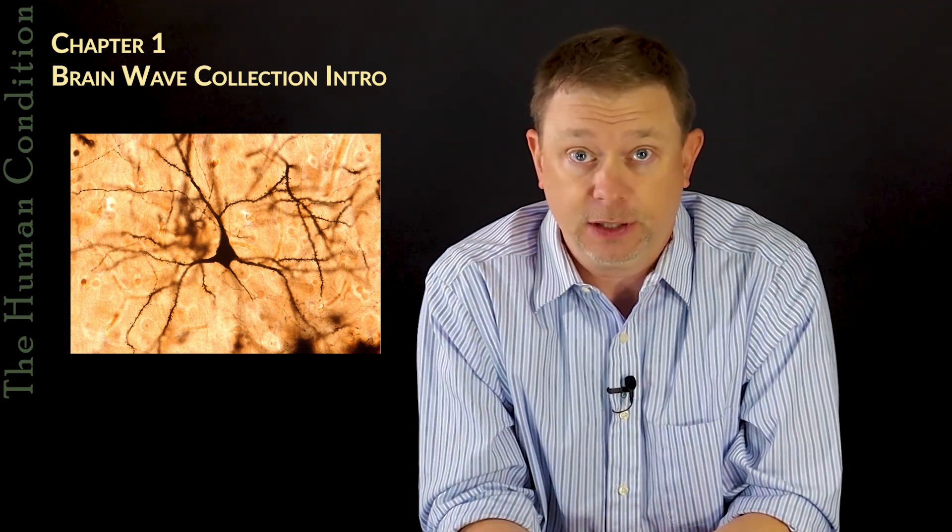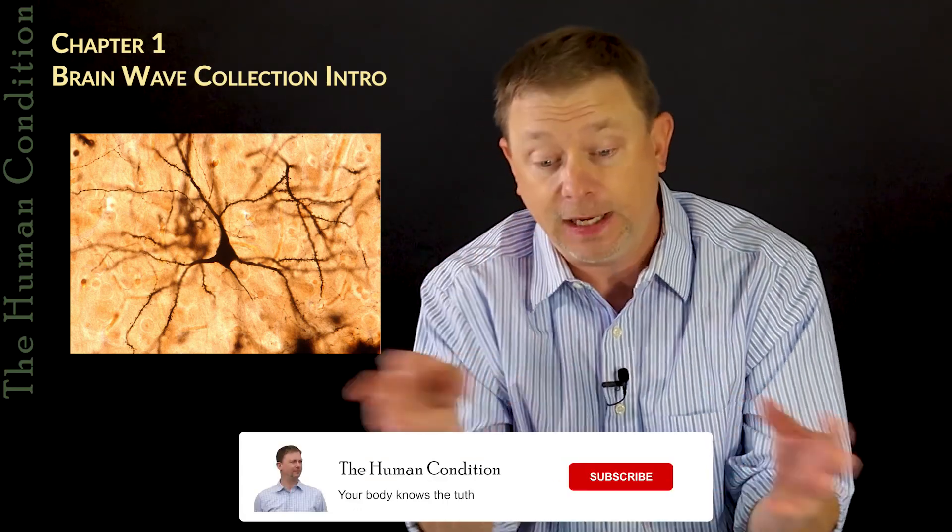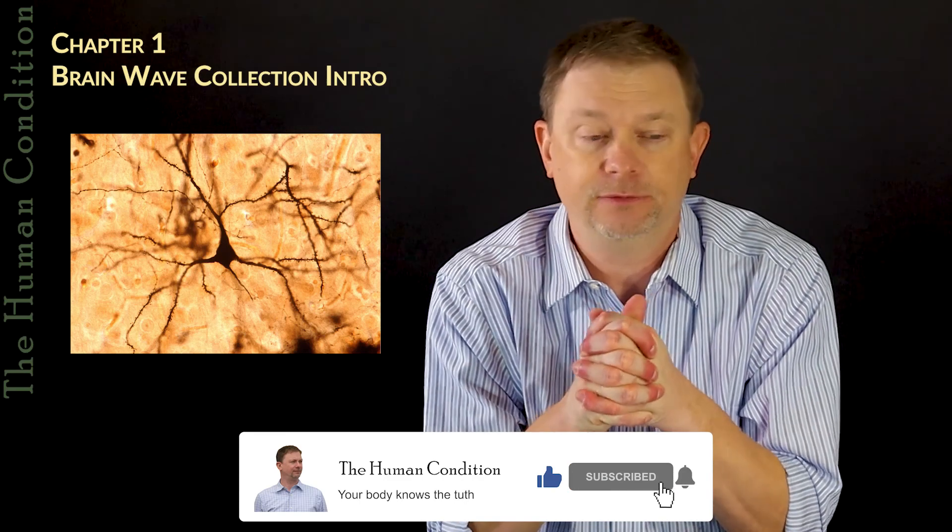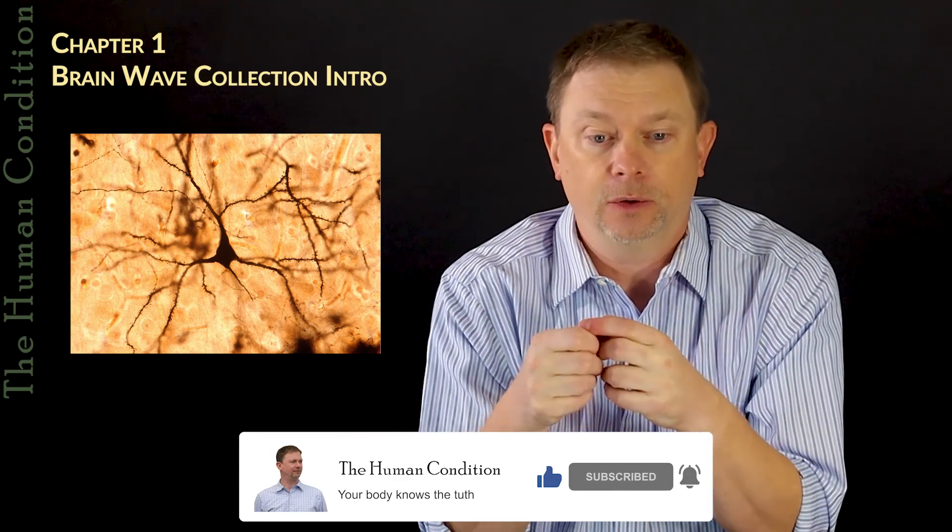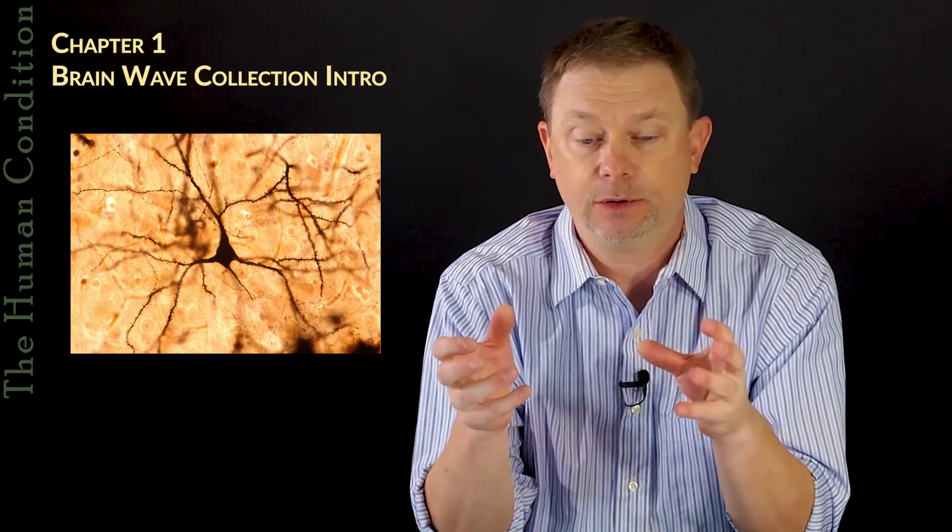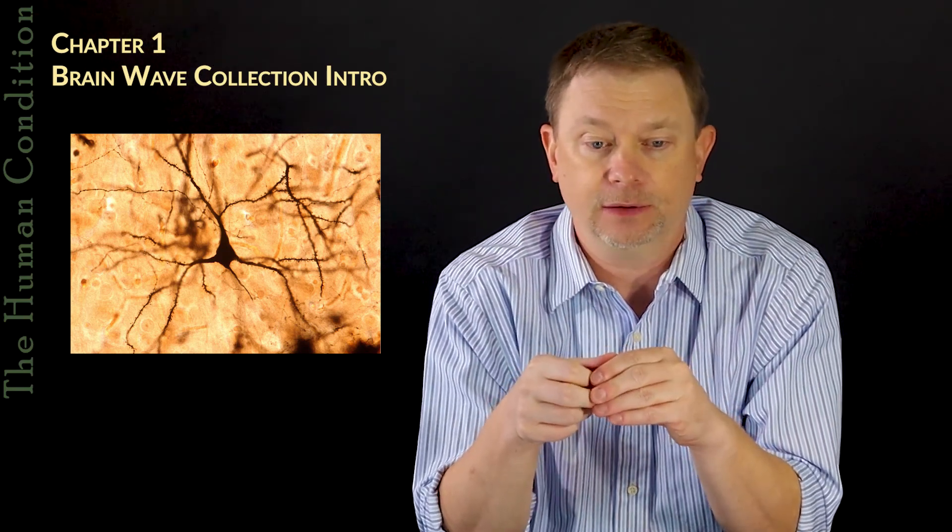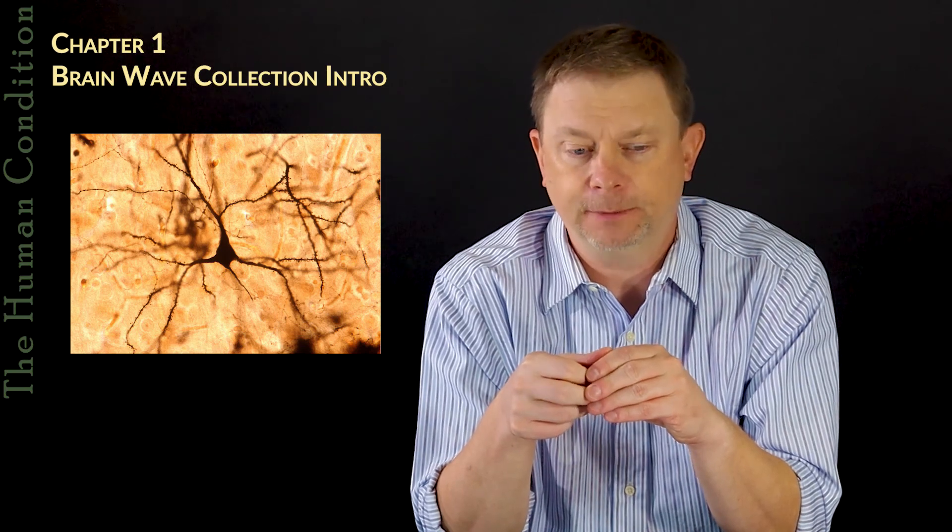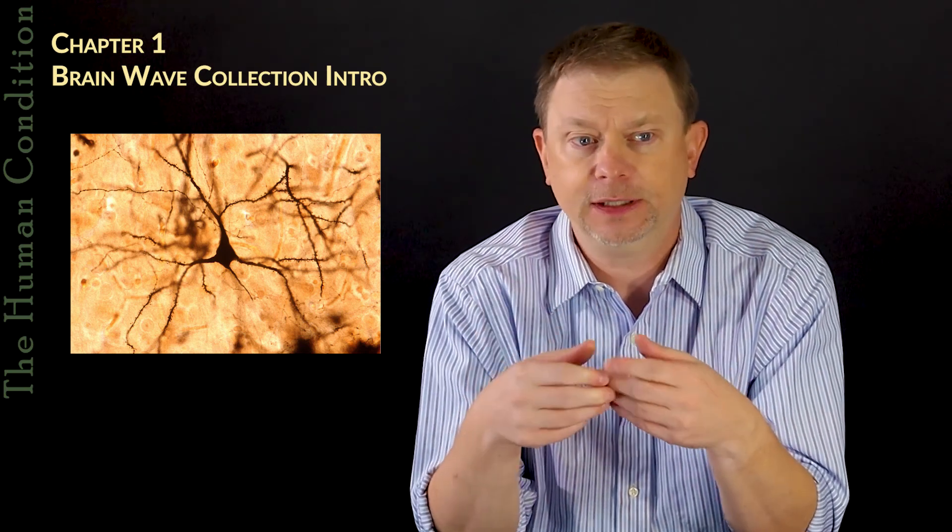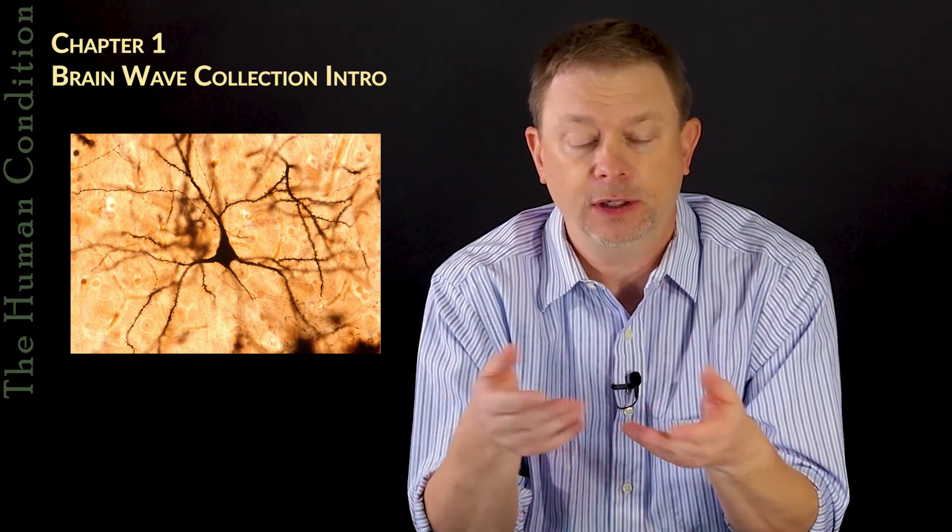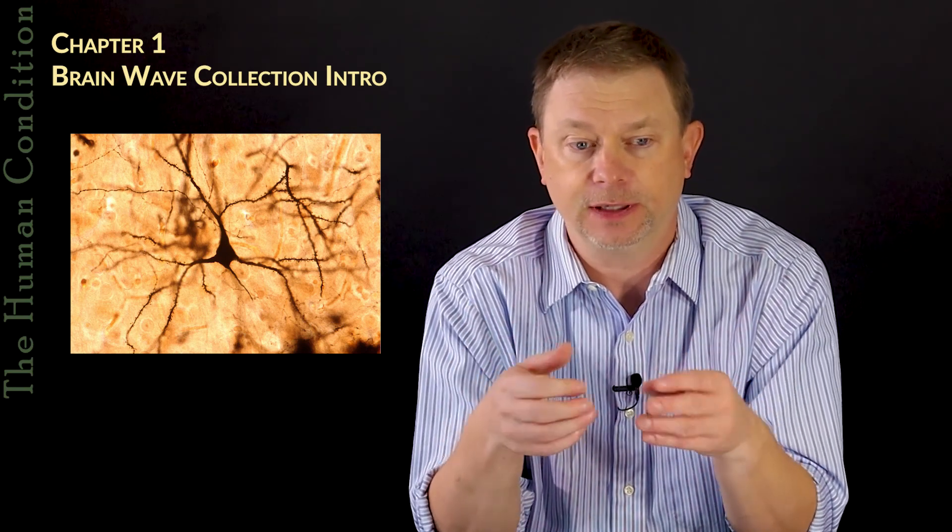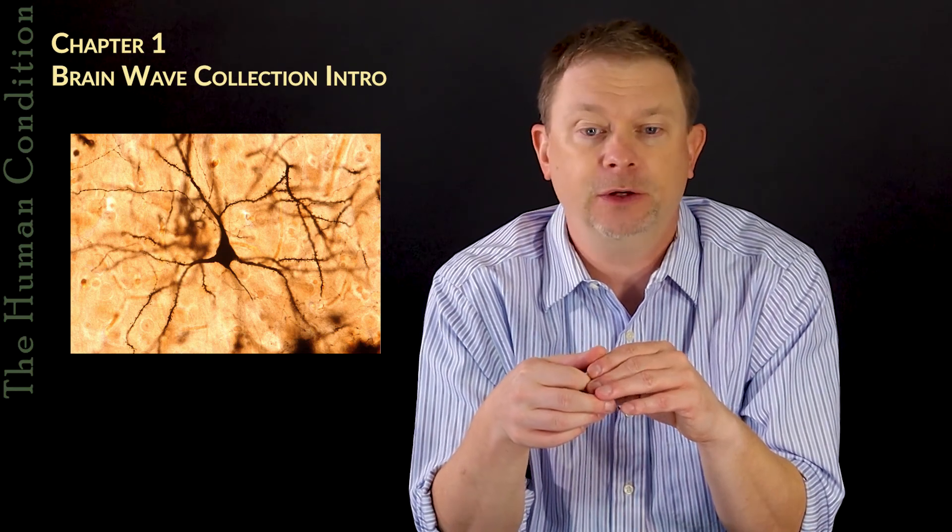We pick up the excitatory post-synaptic potential after the synapse from these giant pyramidal cells of Betz. Those are big enough for us to pick up an electrical signal from and aggregate a bunch of them. But there are many types of cytoarchitectural or structural or anatomical cells that are smaller and different, and we can't pick up those brainwaves very well. Those evolutionarily or embryologically older, phylogenetically older types of cells are smaller and architecturally different. They don't create robust electrical signals for us to pick up.